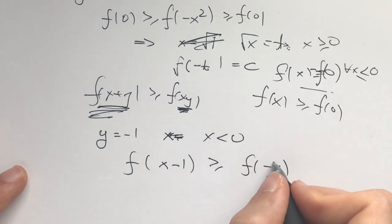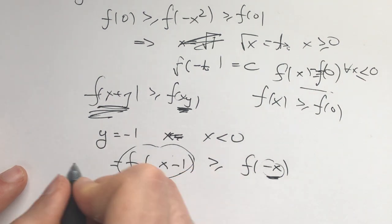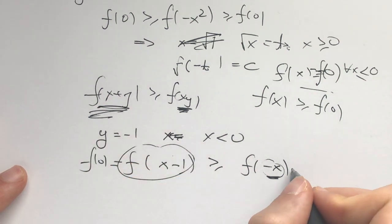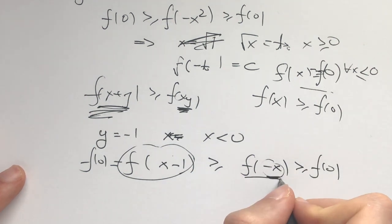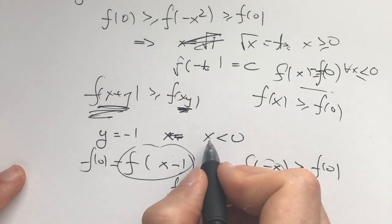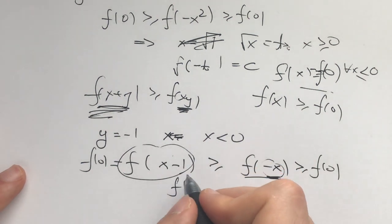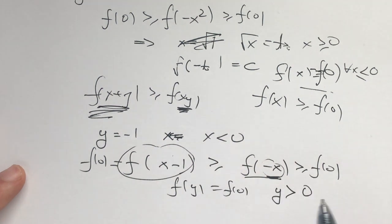Now, f(-x) is ≥ 0. And we know this thing, because it's negative, equals f(0). And this thing is ≥ f(0). And now we have that f of all negative x, where x < 0, i.e. f(y) is going to equal f(0), where y is a positive real number.